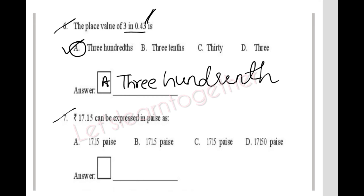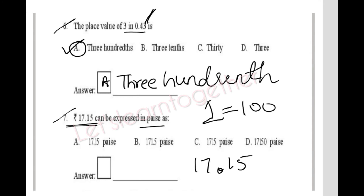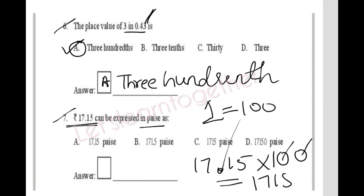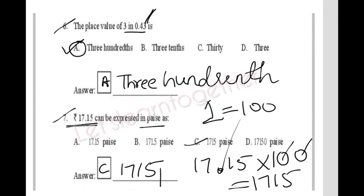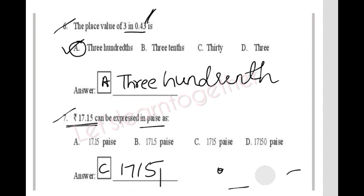Question 7: Rupees 17.15 expressed in paise. Since 1 rupee = 100 paise, you multiply 17.15 by 100, which gives 1715 paise. The answer is option C: 1715 paise. Write the full answer 'paise' in the space provided.